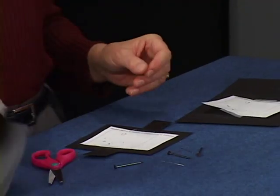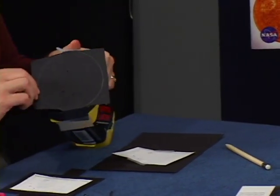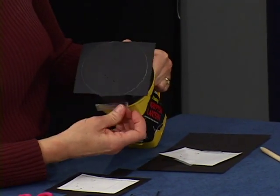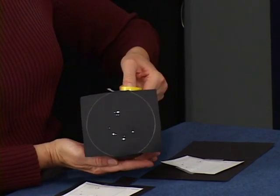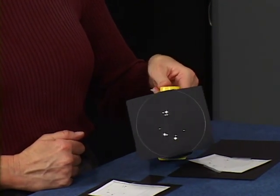Remove the template and tape the star mask over the front of your flashlight. You can make as many of these as you like.